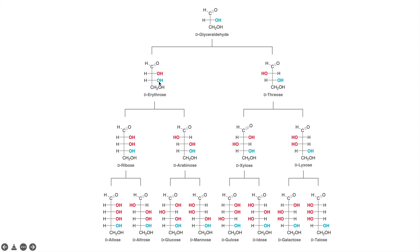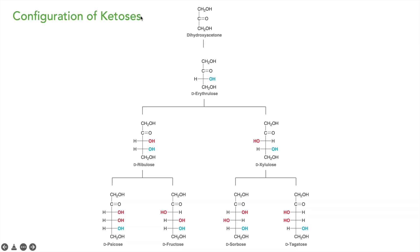You continue extending the chain: add one carbon with the hydroxyl on one side, then the other, and repeat the process. Each step doubles the number of structures, giving all aldose configurations. For ketoses, the same principle applies — starting from dihydroxyacetone, you add one chiral carbon to get D-erythrulose.